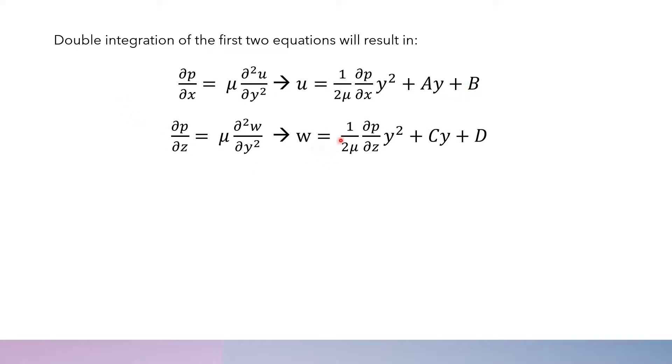From this equation, we get W equals 1 over 2μ multiplied by ∂P/∂Z multiplied by Y² plus CY plus D. Again, C and D are integration constants.